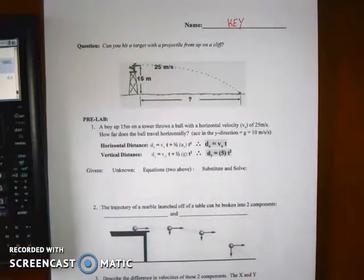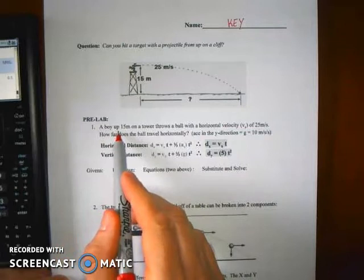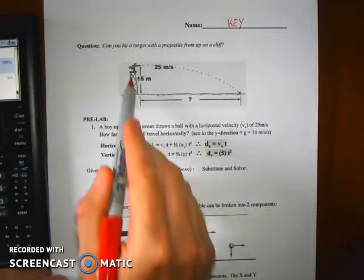All right, here's a key to your little activity. The problem that sets up here says that there's a boy up 15 meters on a tower, so you can see it in the diagram.